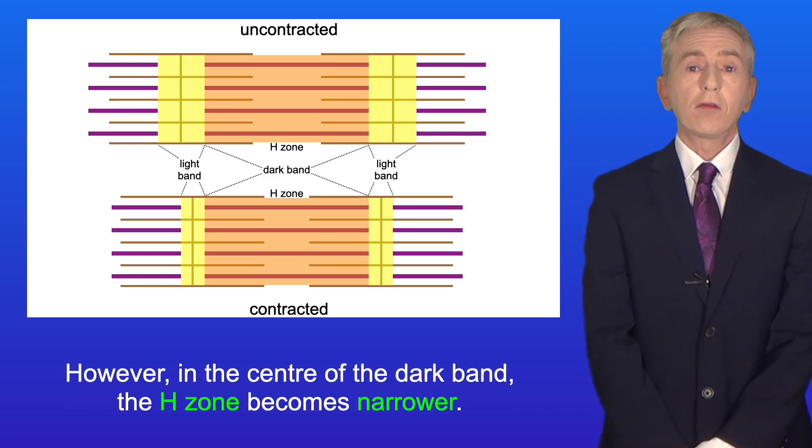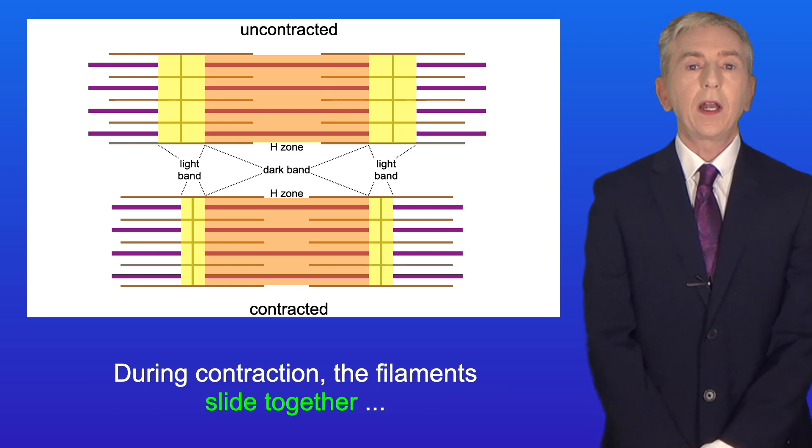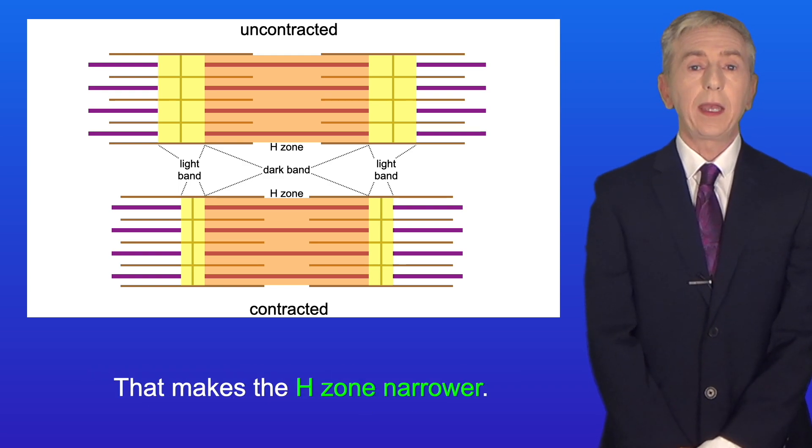However, in the center of the dark band the H zone becomes narrower. Remember that the H zone contains only myosin with no overlapping actin. During contraction the filaments slide together so there's now more overlap between the actin and the myosin and that makes the H zone narrower.